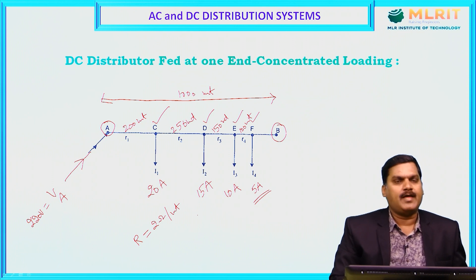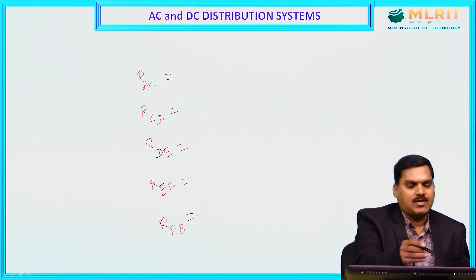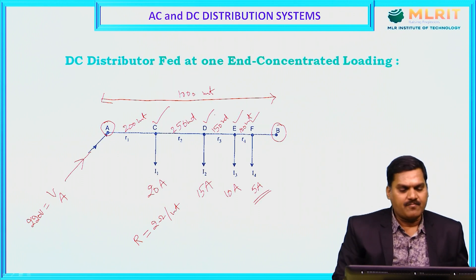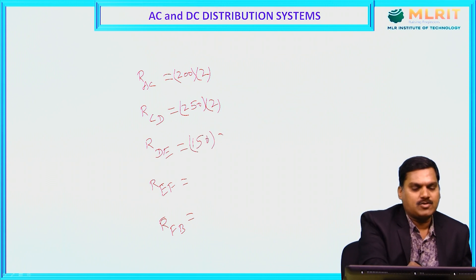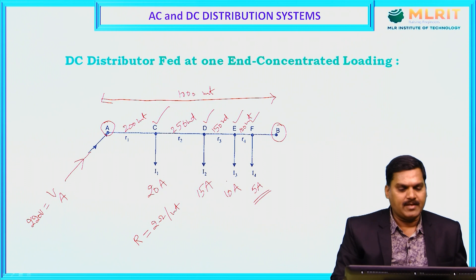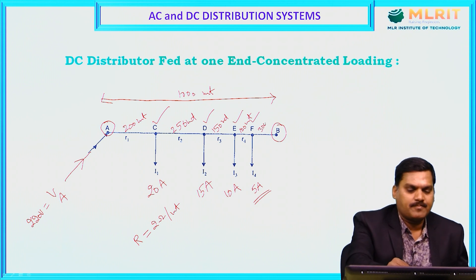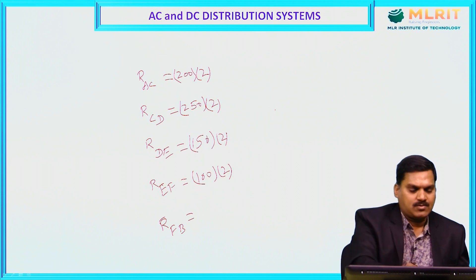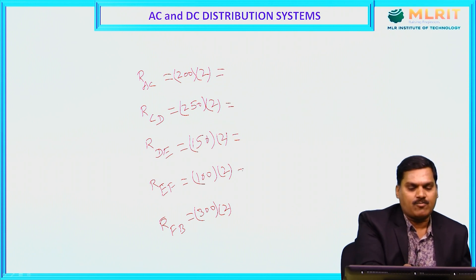AC length is 200 meters, so 200 meters multiplied by 2 ohms per meter. CD length is 250 meters multiplied by 2 ohms per meter. DE is 150 meters multiplied by 2, and EF is 100 meters multiplied by 2. The remaining length from 1000 is 300 meters, so that section resistance is 300 multiplied by 2 ohms. Like this, in all sections we have to calculate the resistance value.